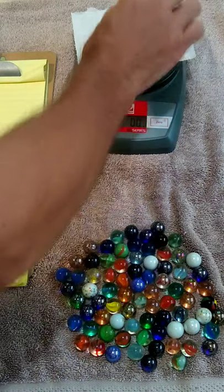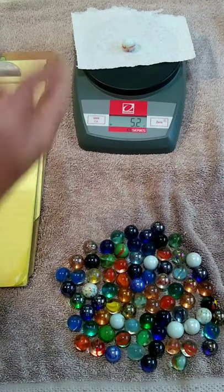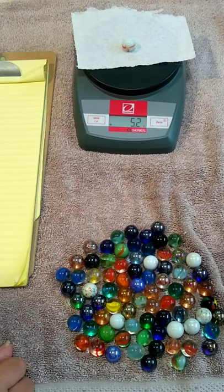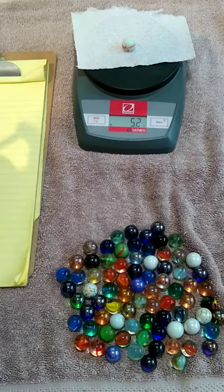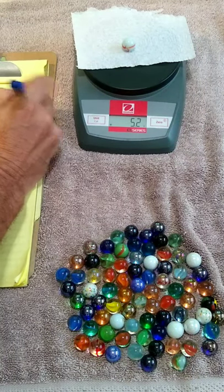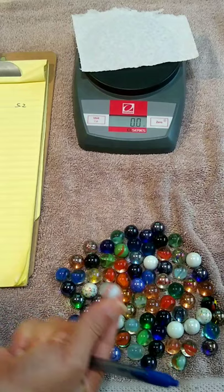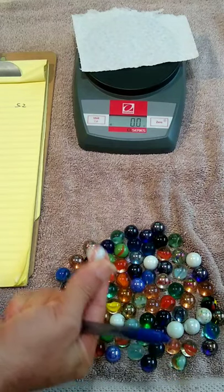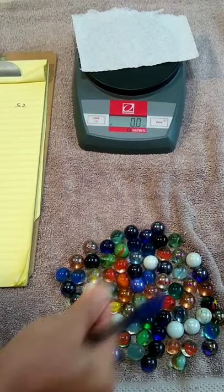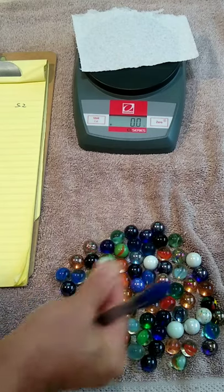But I could say take one marble and say, okay, that's 5.2, so the average must be 5.2. And write that down, 5.2. But that wouldn't be a very good point estimate of what the average actually is for these marbles, necessarily.